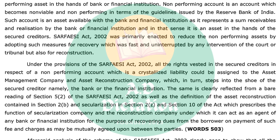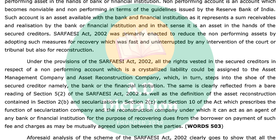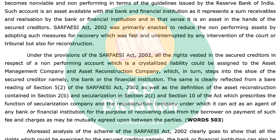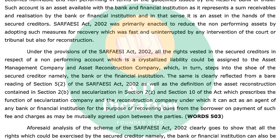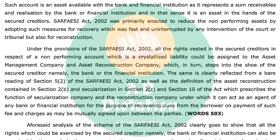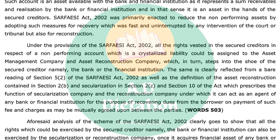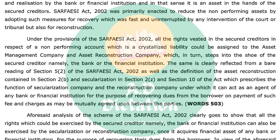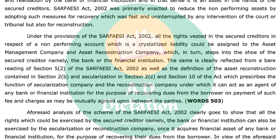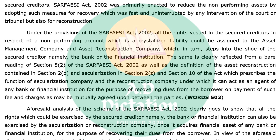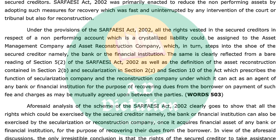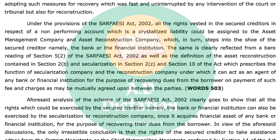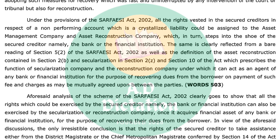Which in turn steps into the shoes of the secured creditor, namely the bank or the financial institution. The same is clearly reflected from a bare reading of Section 5 of the SARFAESI Act 2002, as well as the definition of asset reconstruction contained in Section 2(b) and securitization in Section 2(z) and Section 10 of the Act, which prescribes the functions of the securitization company and the reconstruction company under which it can act as an agent of any bank or financial institution for the purpose of recovering dues from the borrower on payment of such fee and charges as may be mutually agreed upon between the parties.